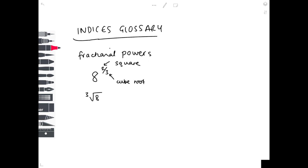Let's find the cube root of 8 first. What number is multiplied by itself 3 times to get 8? It is 2, because 2×2=4, ×2=8. Then we square that result, giving us 4. So 8 to the 2/3 equals 4.